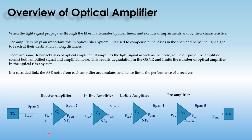The optical amplifier system consists of the booster amplifier, preamplifier, and inline amplifier. When the light signal propagates through the optical fiber, this light signal is attenuated by the fiber's linear and non-linear impairments and by their characteristics.